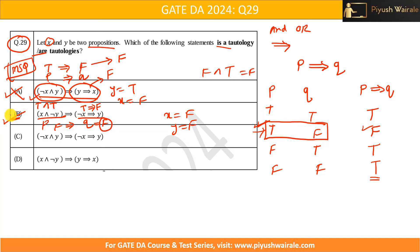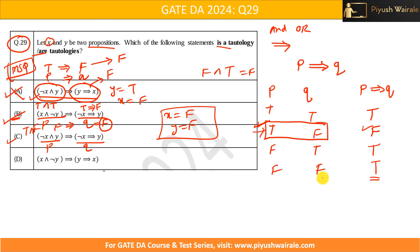Option B is correct because we checked the only critical condition where the statement could be false, and it still gave true — meaning it is true for all combinations. Similarly for option C: with the same combination x=false and y=false, negation of x is true and y is false, true AND false = false, false implies false = true. So option C is also a tautology.